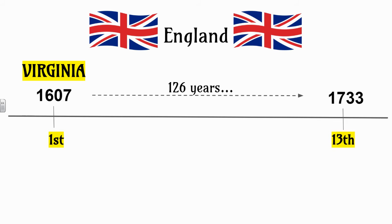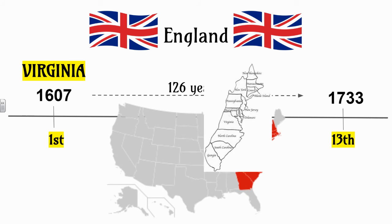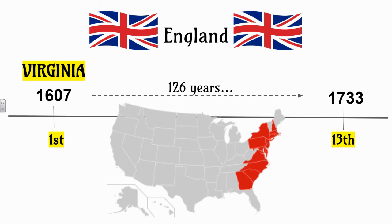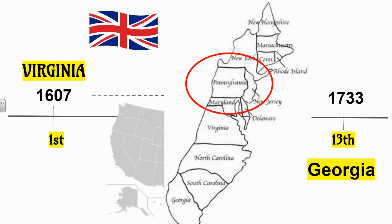Virginia is the first colony they'll claim, and then over 126 years, finally in 1733, England will finish and claim the 13th. Here are England's 13 colonies — the last and final one, the 13th, was Georgia. And our very own Pennsylvania was one of England's original 13 colonies, falling at number 11.